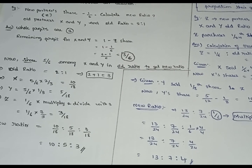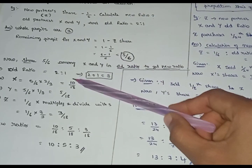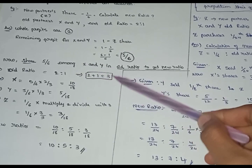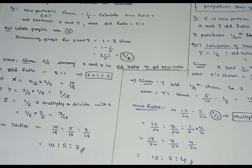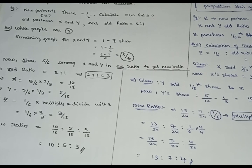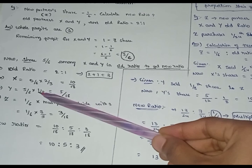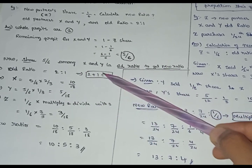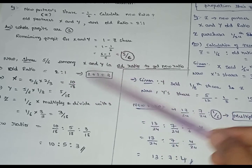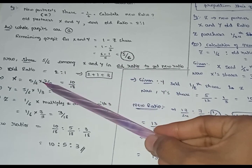Now we divide the 5 by 6 share among X and Y in their old ratio to get the new ratio. The old ratio of X and Y is 2 is to 1, so 2 plus 1 equals 3 — meaning 2 parts for X and 1 part for Y. Now X's new share is 5 by 6 into 2 by 3, which equals 10 by 18.